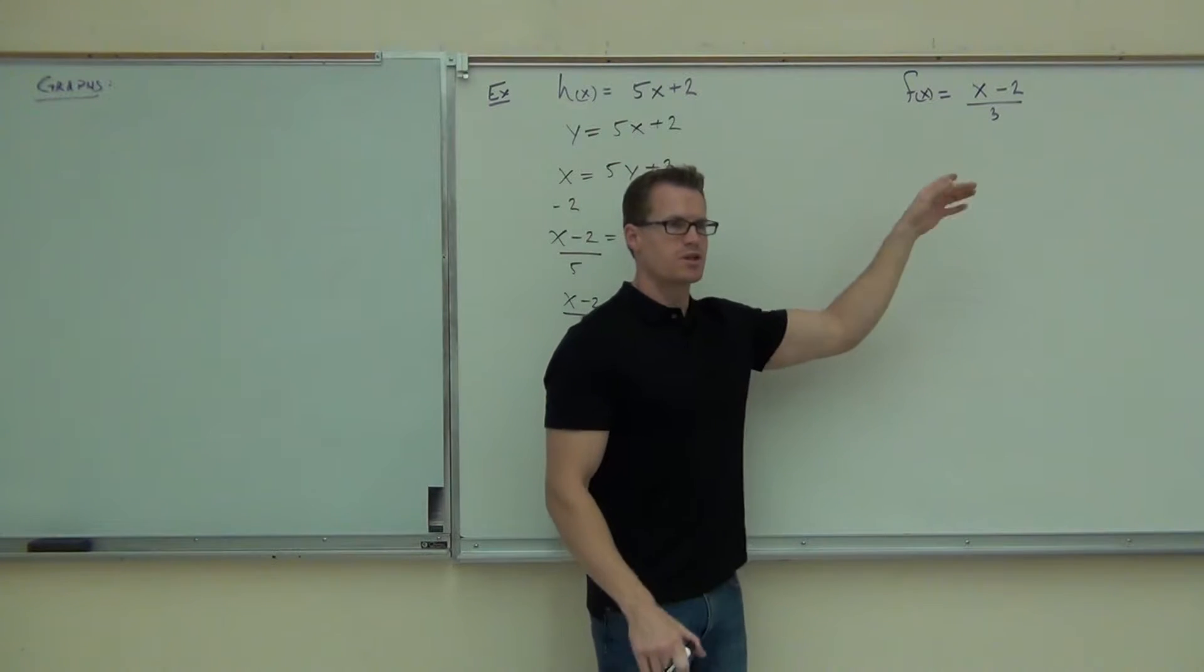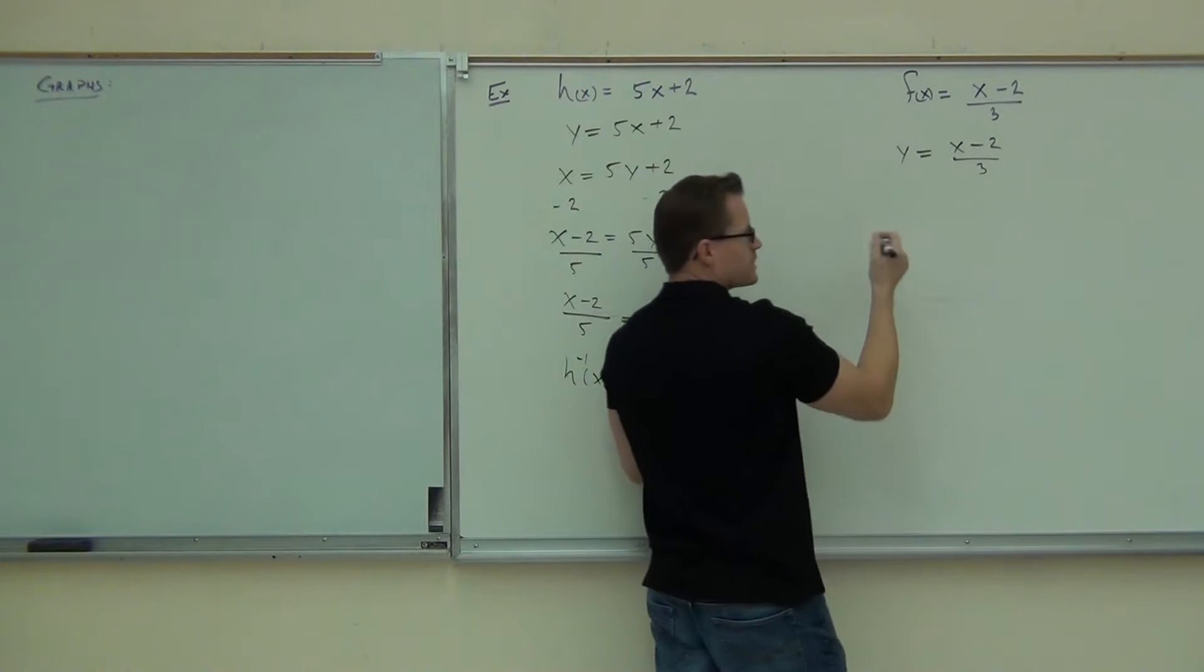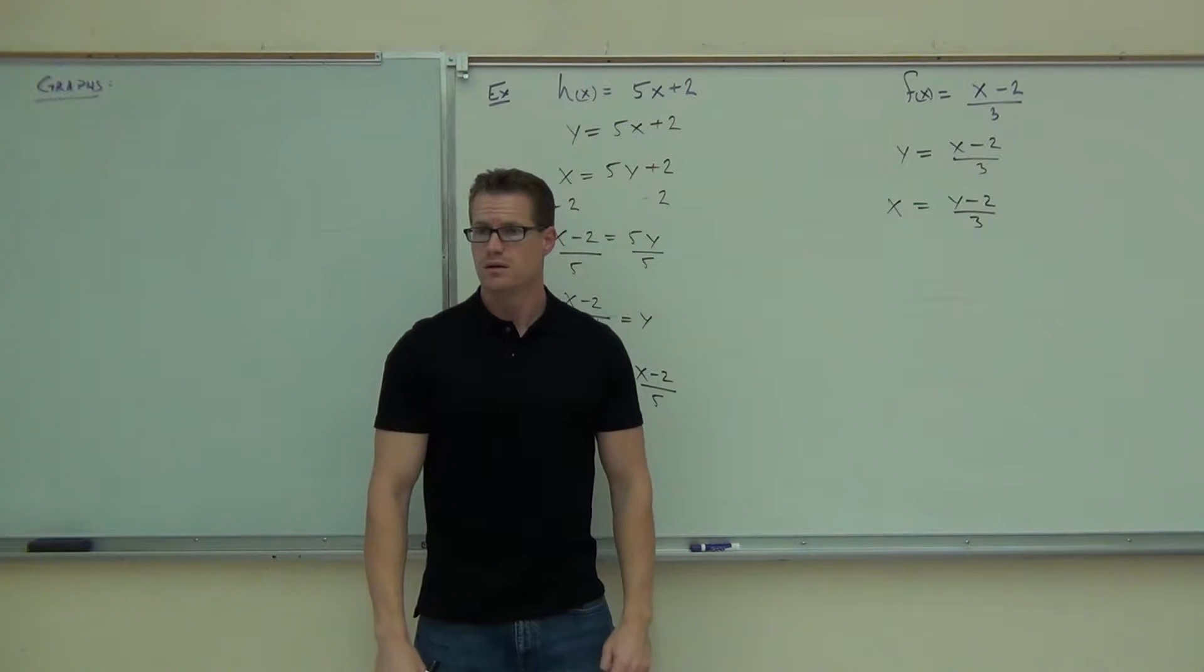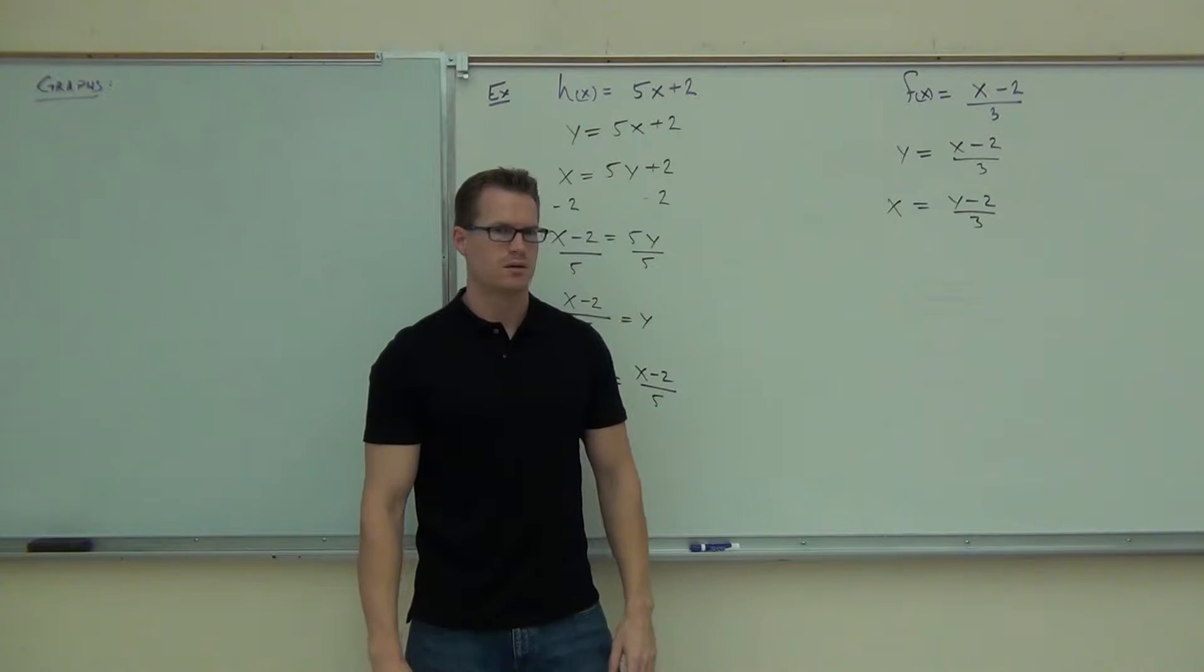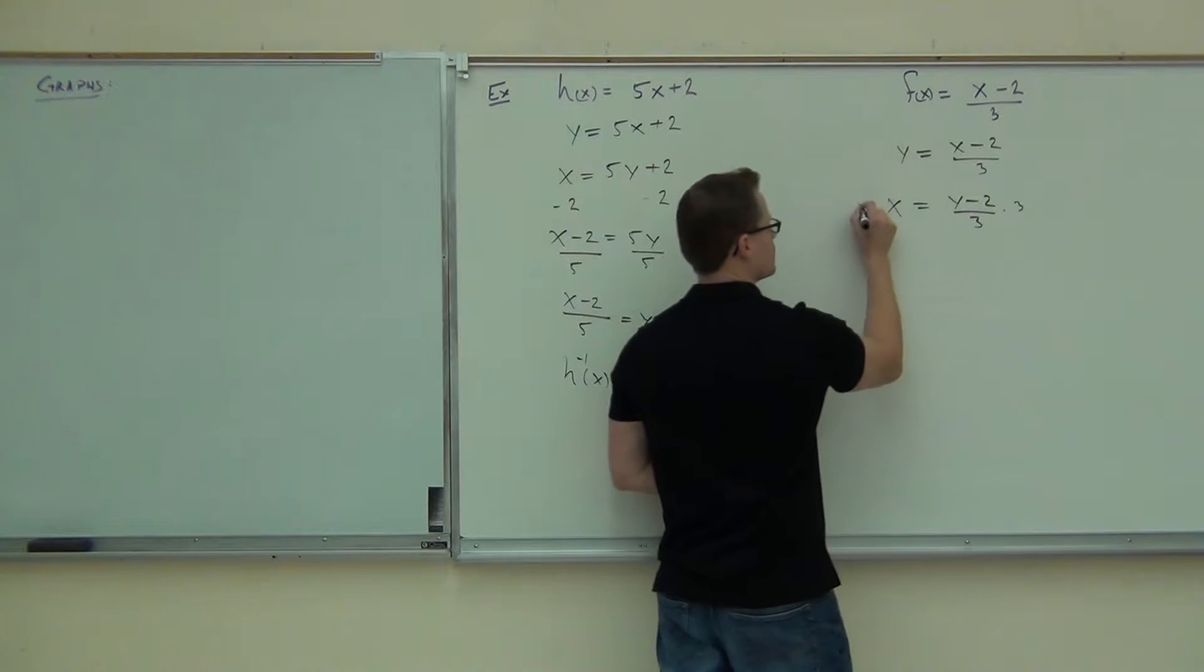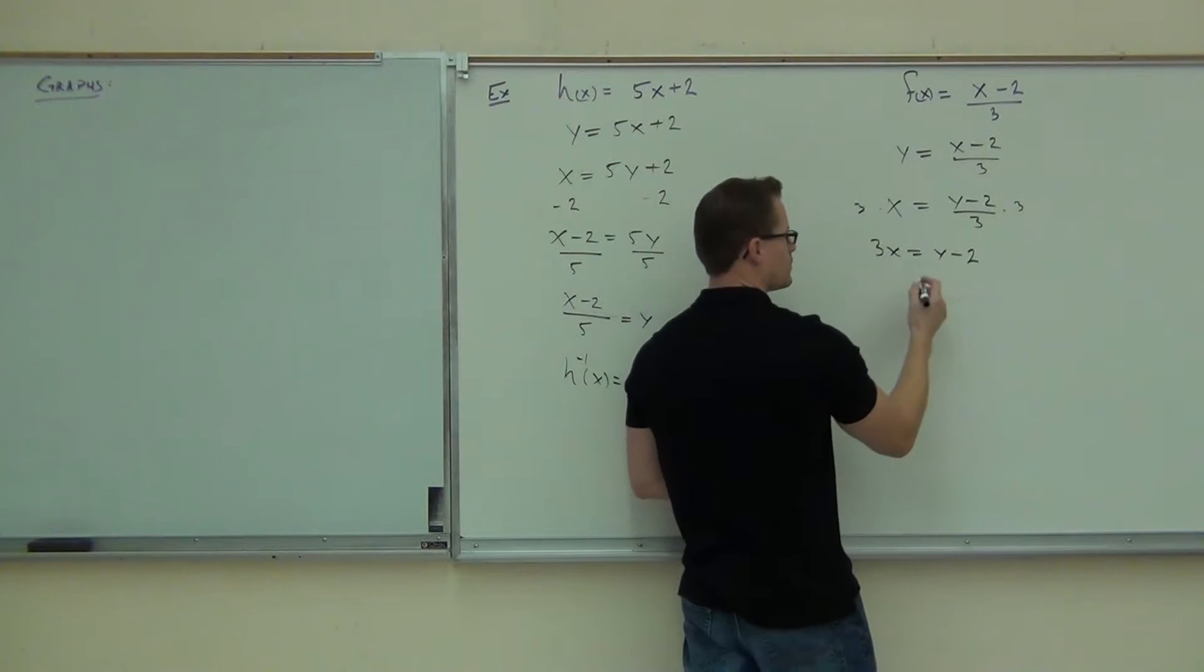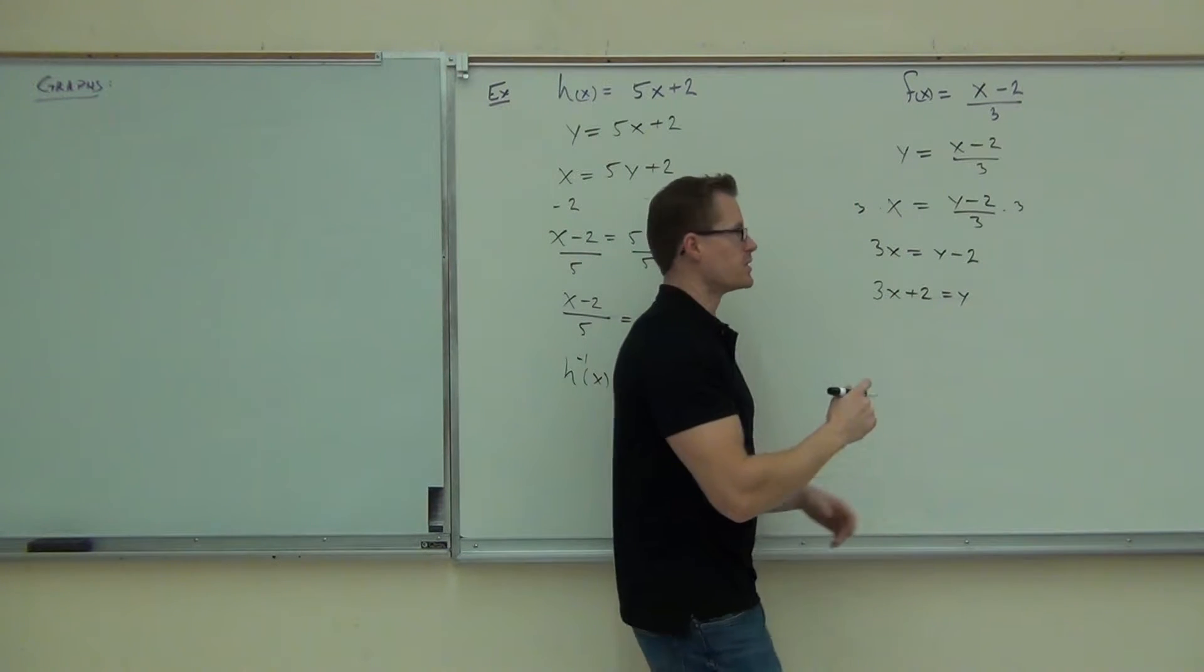Now, could you still do it on this one? I want you to notice that when we do switch our variables here, you still need to know how to do it. If we get x equals y minus 2 over 3, can you still solve that for y? Are you okay on getting that far, by the way? How are you going to solve that for y? So don't forget that you can do that. If you multiply by 3 here, we get 3x equals y minus 2. Of course, just add 2 on both sides. You get 3x plus 2 equals y, and that would be your inverse.